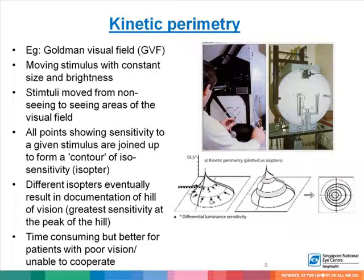Formal perimetry testing can be either kinetic or static. Kinetic perimetry, for example Goldman visual fields, uses a stimulus that moves with constant size and brightness. The stimuli are moved from non-seeing to seeing areas of the patient's visual field, and all points showing sensitivity to a given stimulus are joined to form a contour of isosensitivity, referred to as isopters. Different isopters result in documentation of a hill of vision, with the greatest sensitivity at the peak. This procedure is time-consuming but better for patients with poor vision or those unable to cooperate with static perimetry.